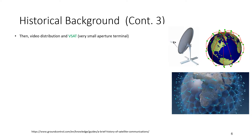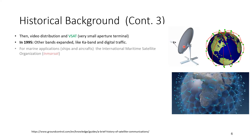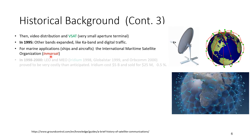After that came video distribution and VSAT — the Very Small Aperture Terminal — which we use today at homes: a small antenna placed on your roof to receive satellite TV channels, and also usable for internet. In 1995, other bands such as the K-band were expanded and used for digital rather than analog traffic. For marine applications — ships and aircraft — the International Maritime Satellite Organization (INMARSAT) was established to track and communicate with ships and transportation.